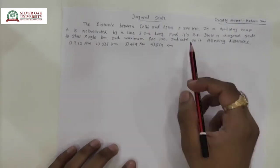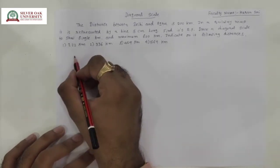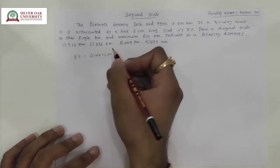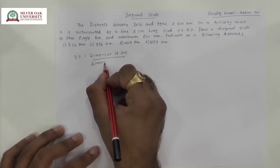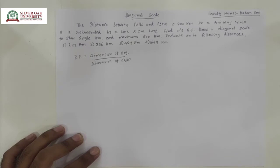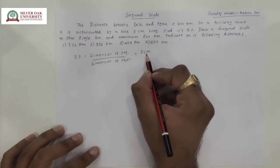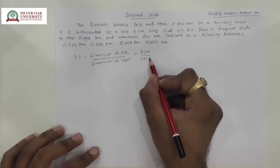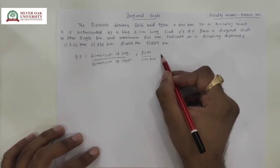First of all, we have to find the value of the RF. The equation for RF is dimension of the drawing divided by dimension of the object. The dimension of the drawing is 5 cm on the railway map, and the dimension of the object is 200 km. So 5 cm divided by 200 km gives us the answer in ratio form: 1 divided by 40 lakh.